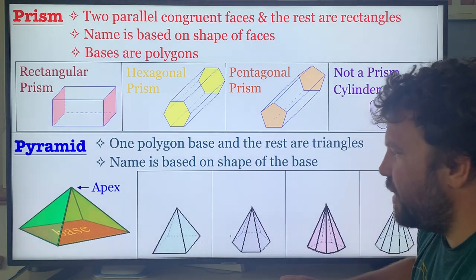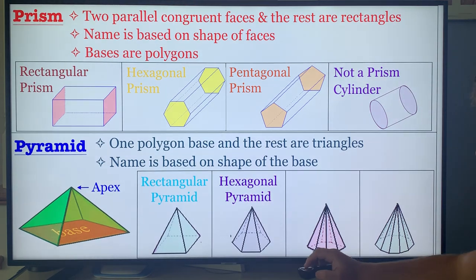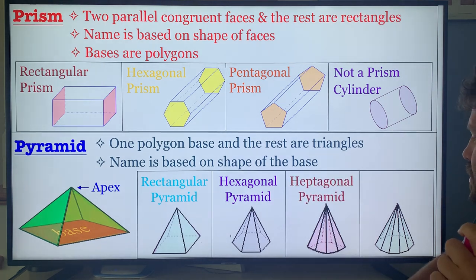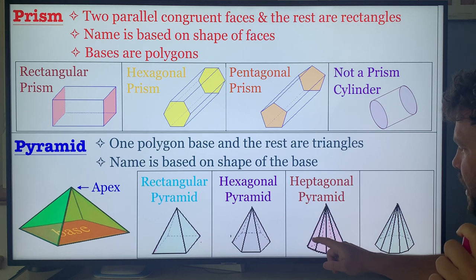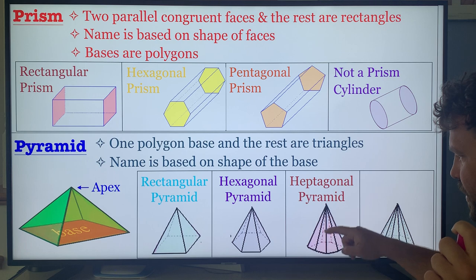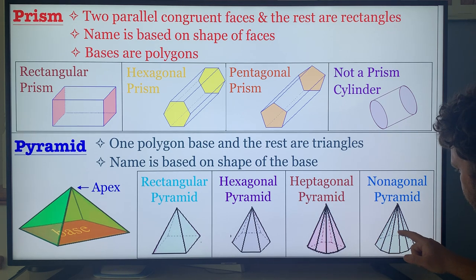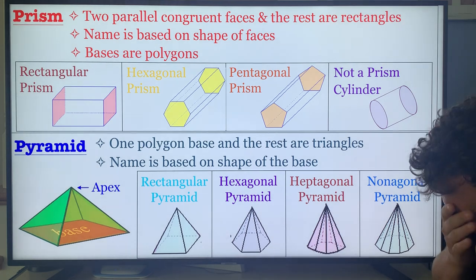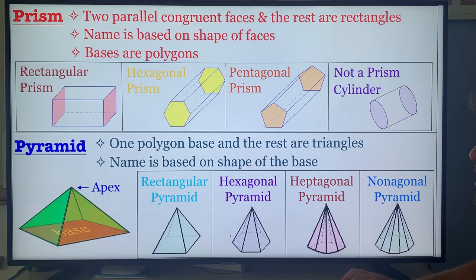Let's name some. What kind of base is that? Rectangle — rectangular pyramid. Six sides: hexagonal pyramid. If you can't tell how many sides there are, count the number of lines running to the apex — the number of edges. One, two, three, four, five, six, seven: heptagonal. This one I count ten edges — that should be a decagonal pyramid. If there were nine it would be nonagonal. The name is always based on the shape of the base.